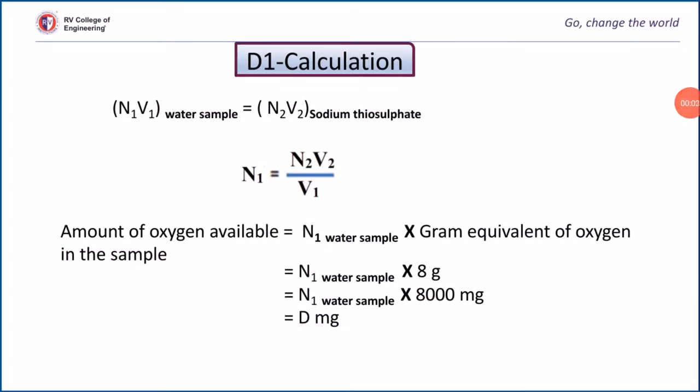Calculation of D1: By knowing the strength of sodium thiosulfate, we can calculate the strength of water sample. Amount of oxygen present in the sample can be calculated by using this relation: N1 multiplied by gram equivalent weight of oxygen. And finally you have to calculate in terms of milligrams. That gives the amount of oxygen present in the water sample, and it is called D1.